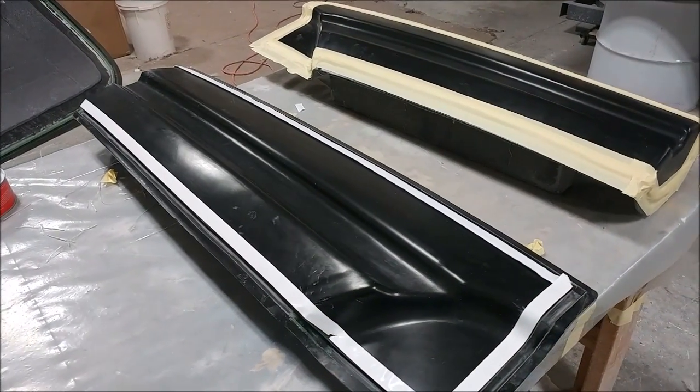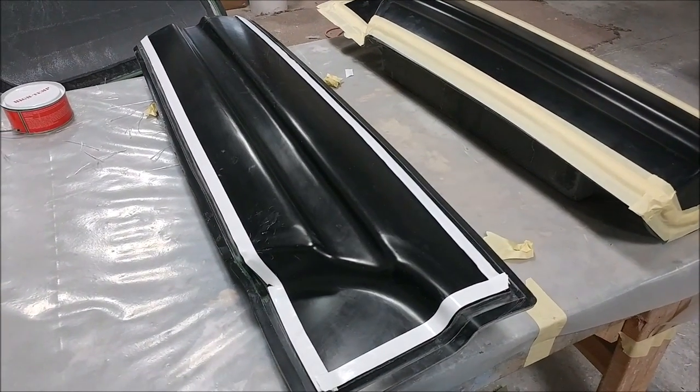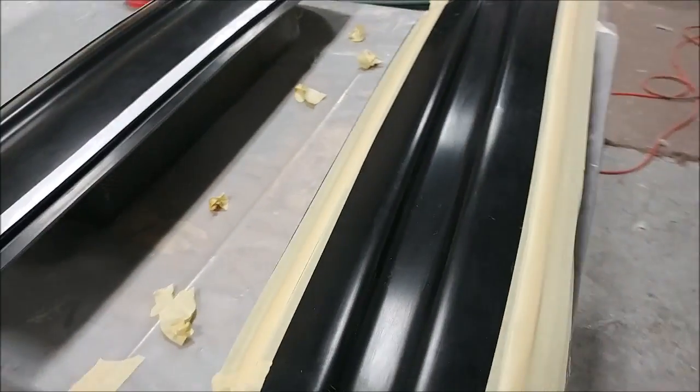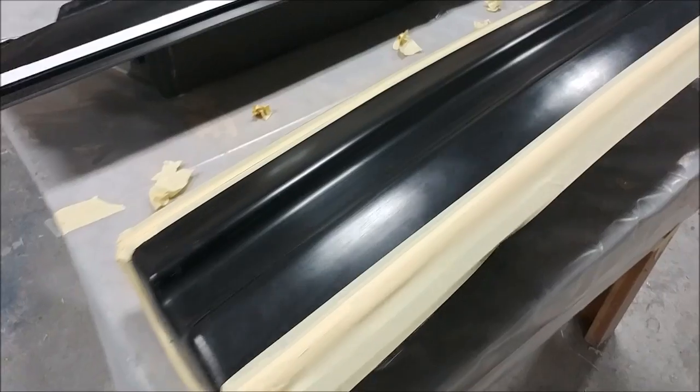These are the molds for the floor braces that go from the rear of the lower end of the door to the back of the cabin and just add extra rigidity. Those are getting ready to lay up as well.